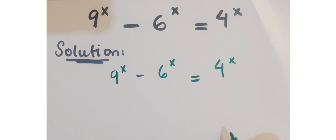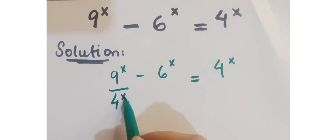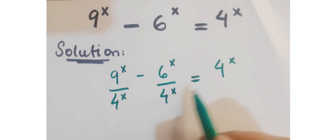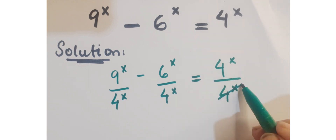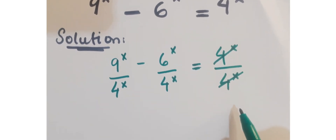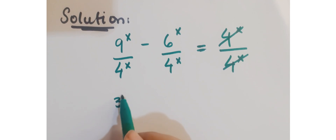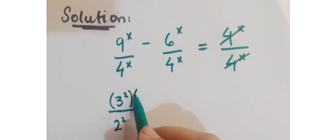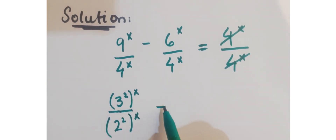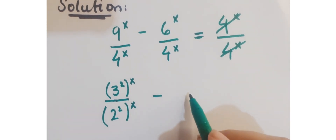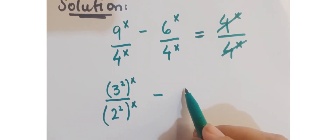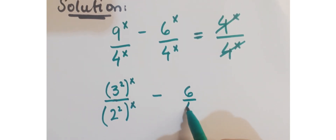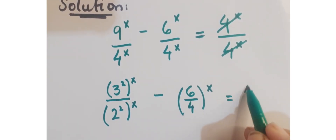Let's see how we proceed in this question. First of all, we are going to divide the whole equation with 4 to the power x. So this term and this term get cancelled, and here 9 can be written as 3 squared and this 4 can be written as 2 squared. So this is 3 squared whole to the power x, and this 6 upon 4 whole to the power x equals 1.